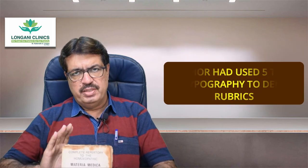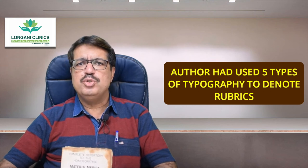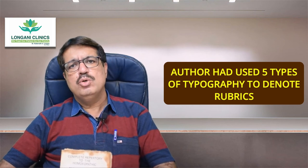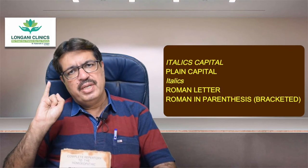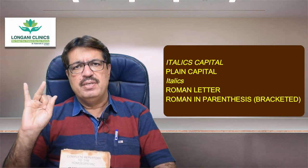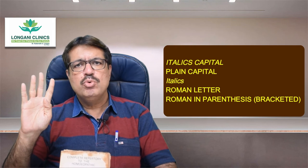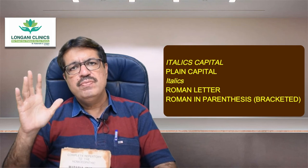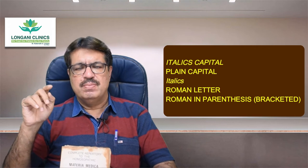In this repertory, five types of typography are used to denote the rubrics. Number 1 is italics capitals. Number 2 is plain capitals. Number 3 is italics. Number 4 is roman. The fifth one is roman in parenthesis, meaning given in brackets. These are the doubtful symptoms.